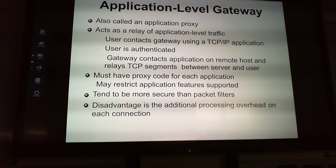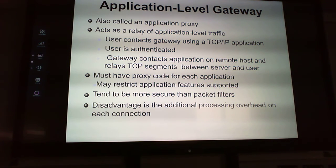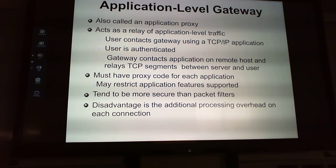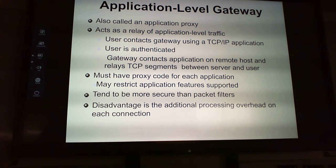Application-level gateways, also known as application proxy firewalls, act as a relay. The user contacts the gateway using a TCP/IP application; if authenticated, the gateway contacts the application on the remote host and relays TCP segments between user and server — providing an extra layer of security. It must have proxy code for each application and may restrict application features. It's more secure than packet filters, but the main disadvantage is significant processing overhead.